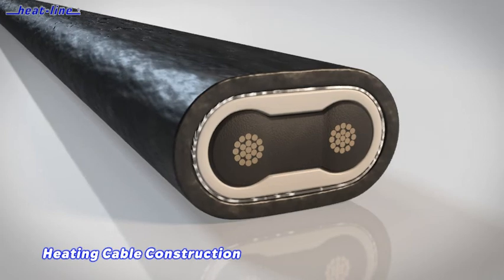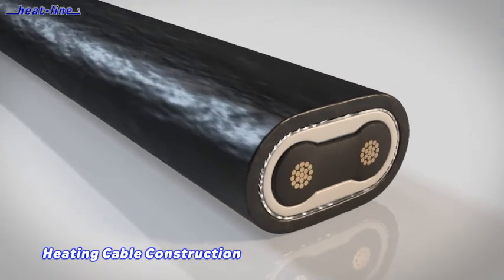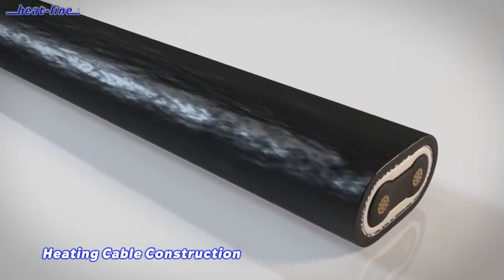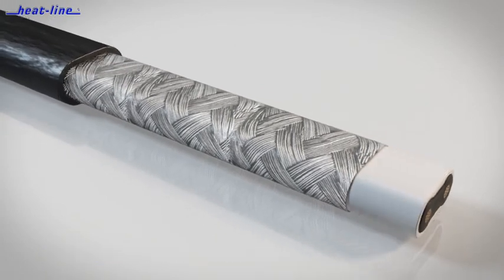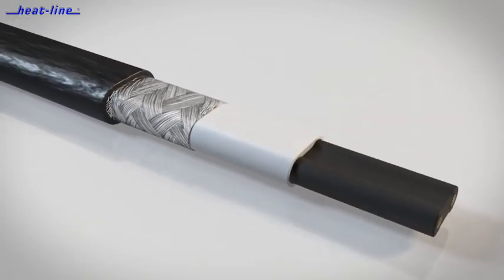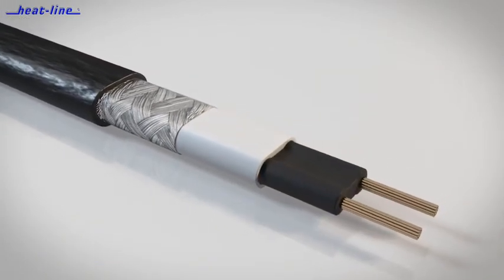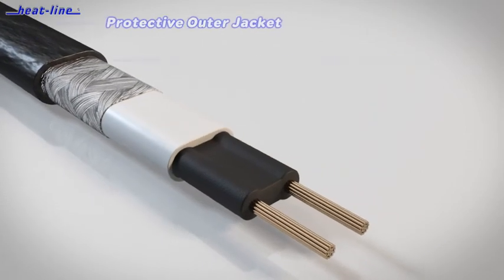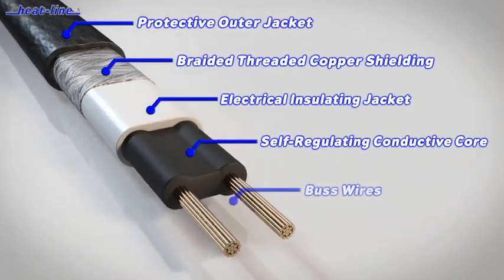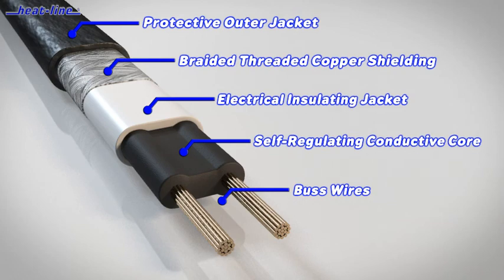All Heat-Line products employ self-regulating conductive polymer technology. Heat-Line heating cables are specially blended combinations of polymer and conductive carbon that create electrical paths between parallel bus wires at every point along their circuit length.